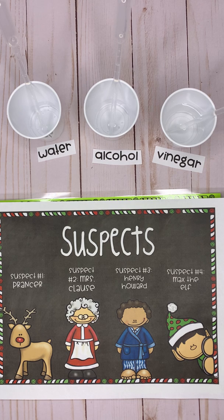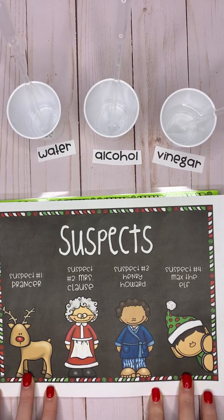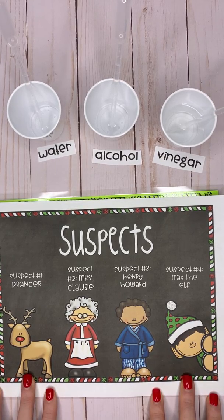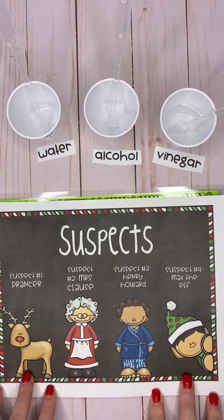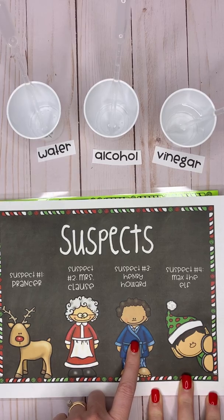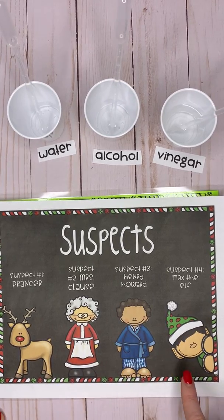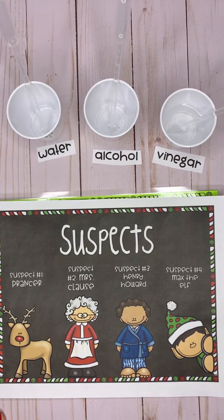Today we're going to do a little test to see if the white substance found at the crime scene undergoes a chemical change that might help identify what that substance is. Then we're going to match it to our suspects — we're looking at five suspects. You only see four here, but remember Santa is our victim and he can also be considered a suspect, so the mysterious white powder could actually belong to Santa. Suspect number one is Prancer, suspect number two is Mrs. Claus, suspect number three is Henry Howard, and suspect number four is Max the Elf.